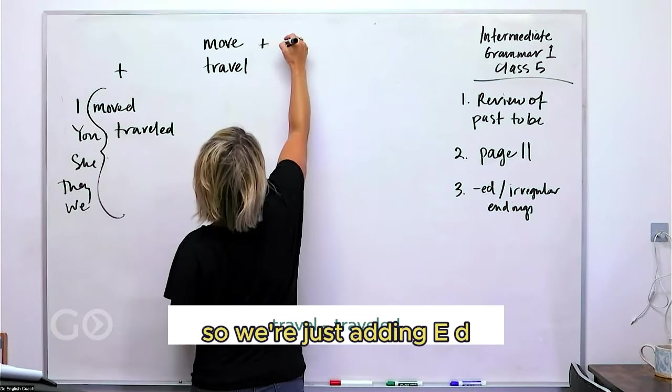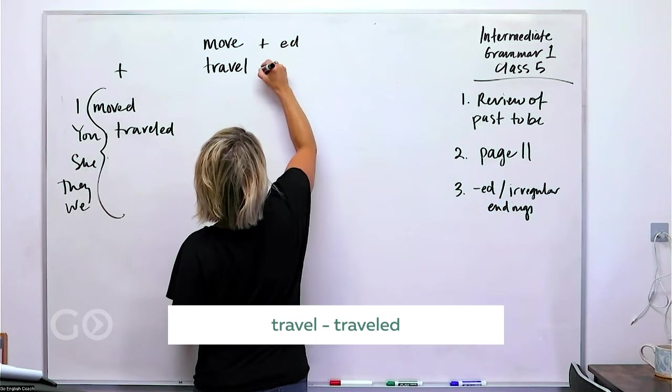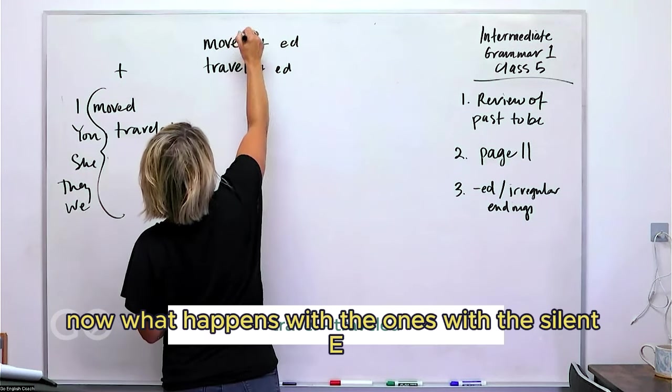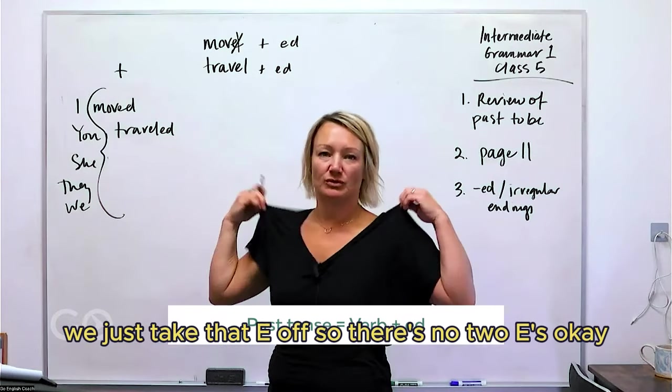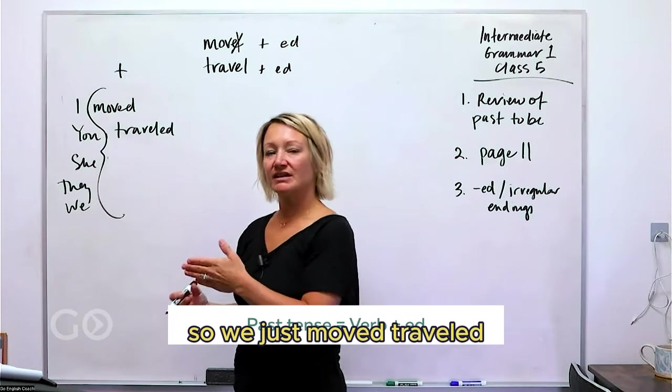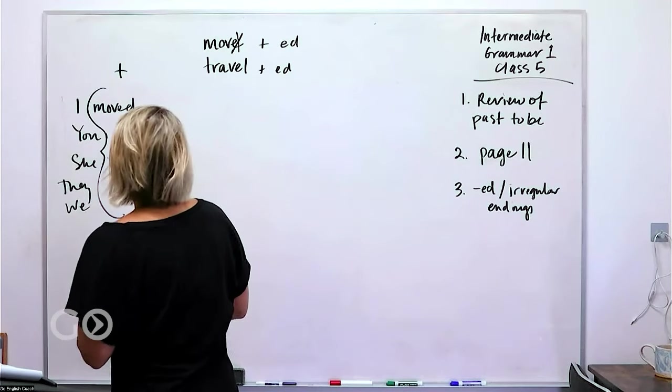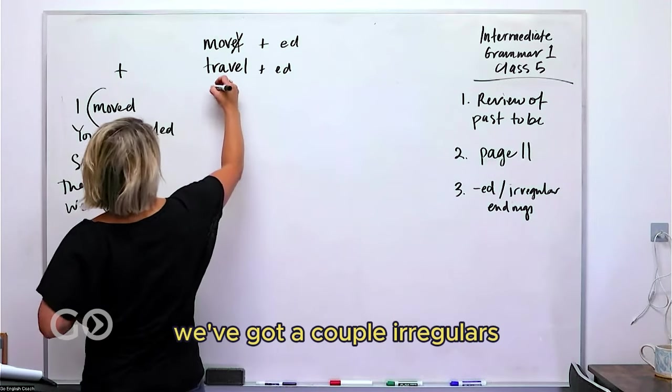Okay, traveled. So we're just adding ed. Now what happens with the ones with the silent e? We just take that e off, so there's no two e's. Okay, so we just moved, traveled.